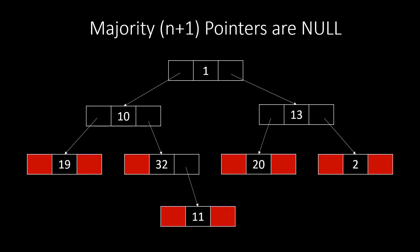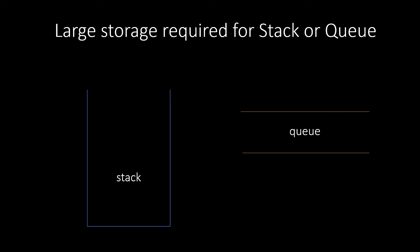For this tree, we have 8 nodes and 9 null pointers. Thus, about n plus 1 pointers are null in a binary tree. Apart from this, we need a large storage space to keep the stack and queue that are used for traversal.